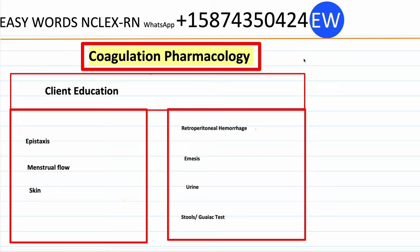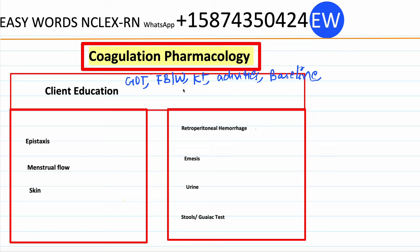Client education prior to starting anticoagulation therapy: nursing should educate the client about the goals of treatment, instruct the client about required follow-up blood work, instruct the client to make diet changes such as avoiding foods rich in vitamin K while taking anticoagulant drugs, avoid hazardous activities because they may trigger bleeding, and obtain baseline vitals and baseline blood work.